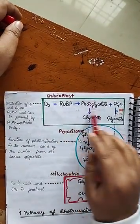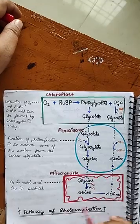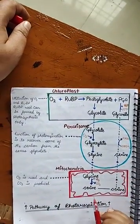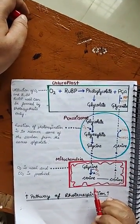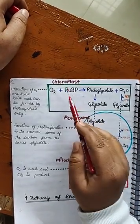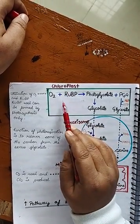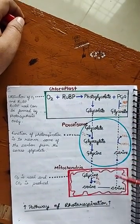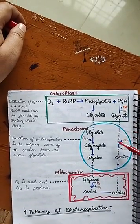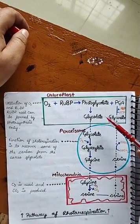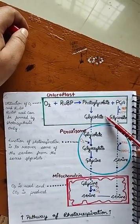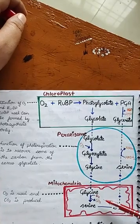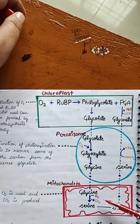This is the schematic pathway of photorespiration. This process takes place in three cell organelles: first is chloroplast, second is peroxisome, and third is mitochondria.